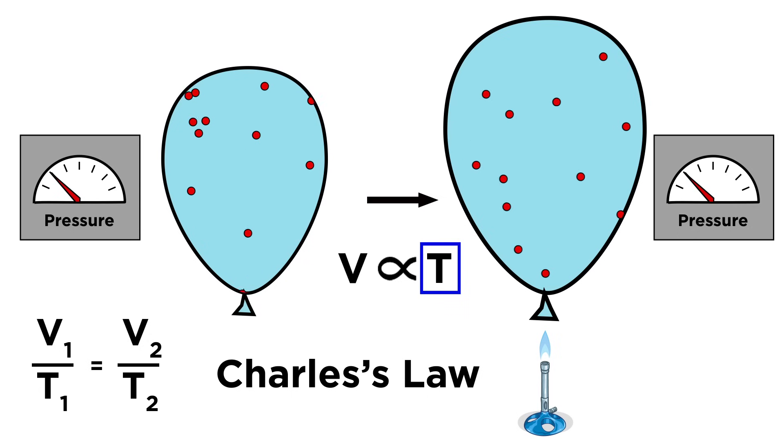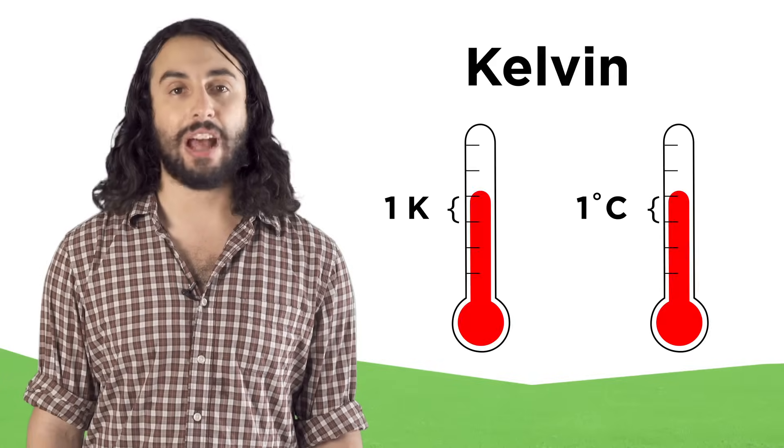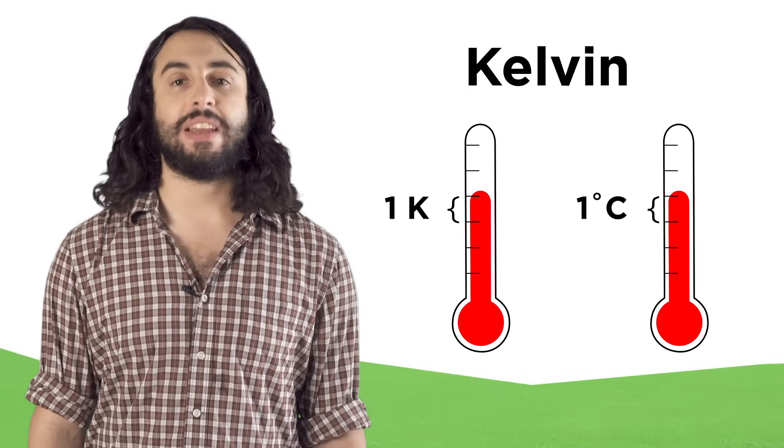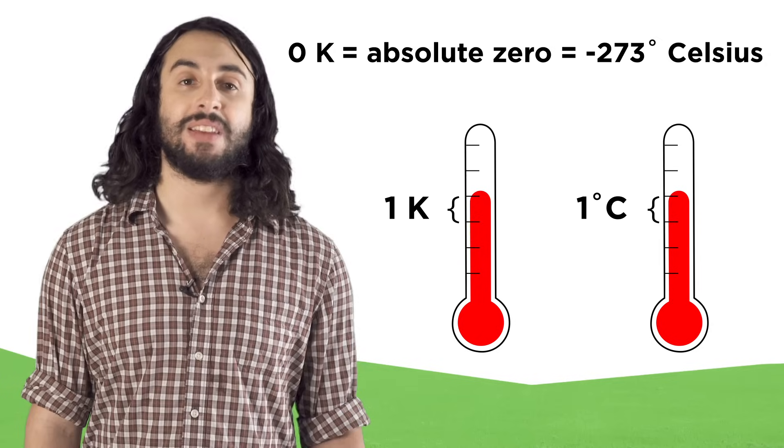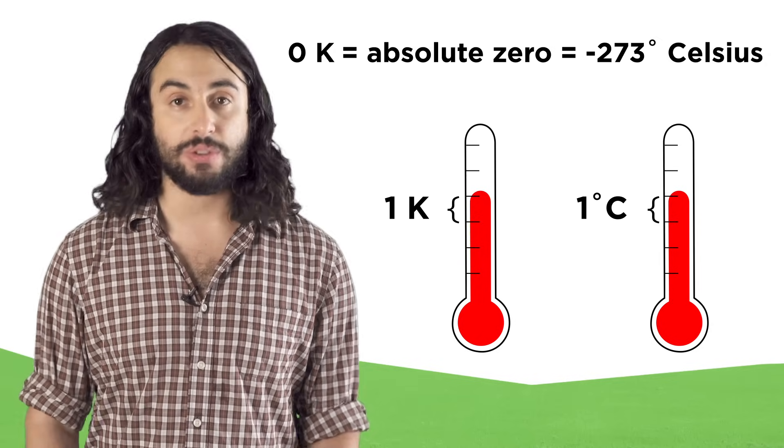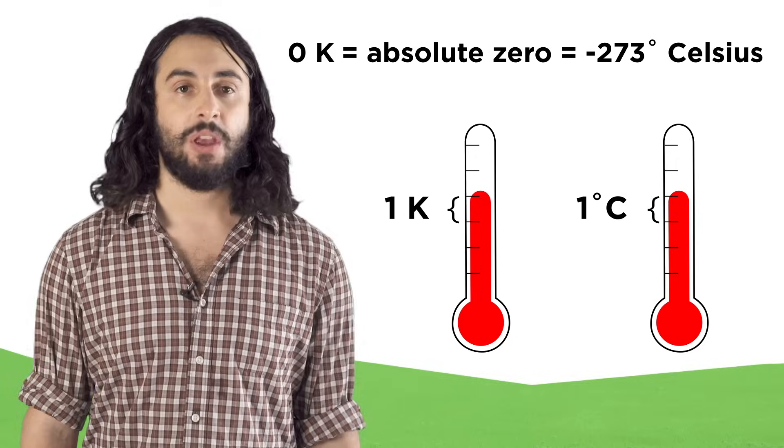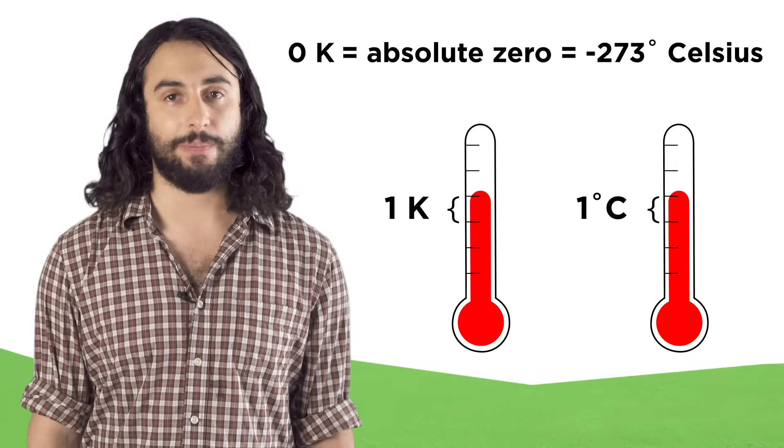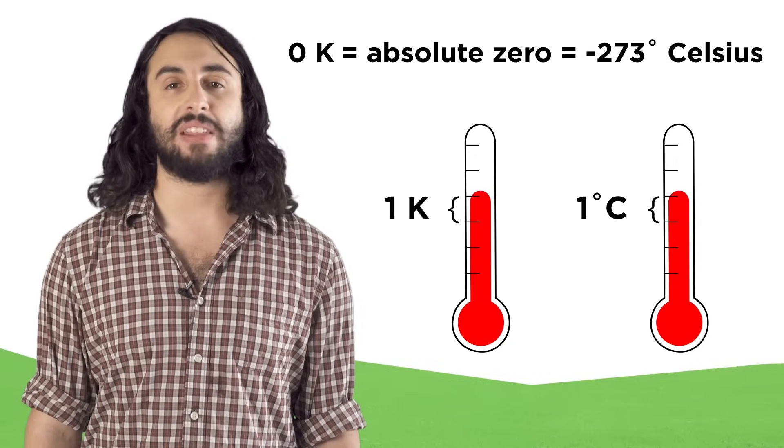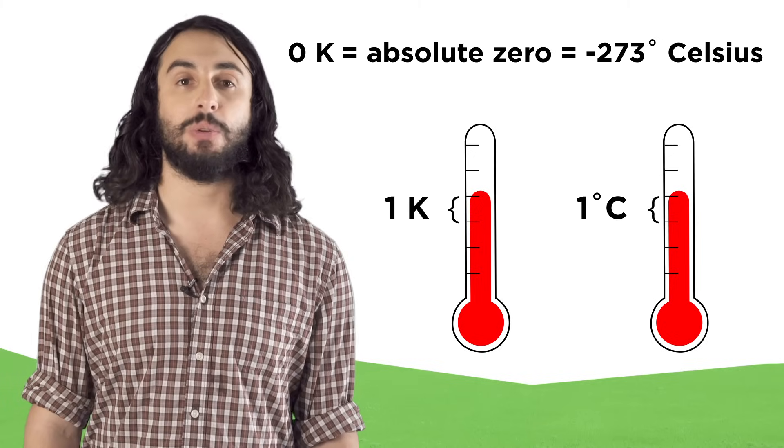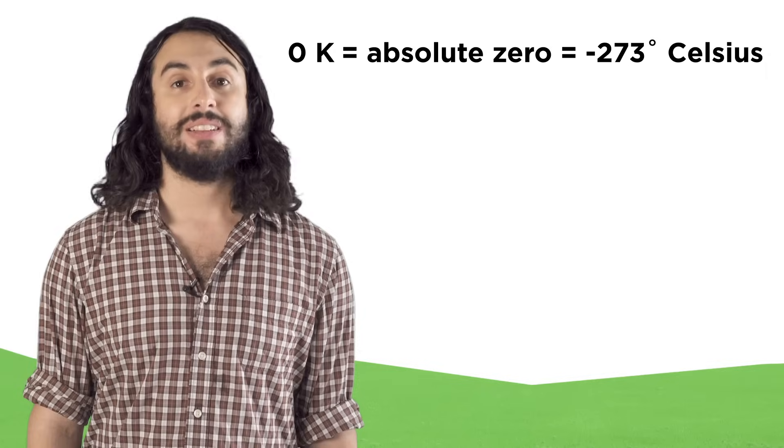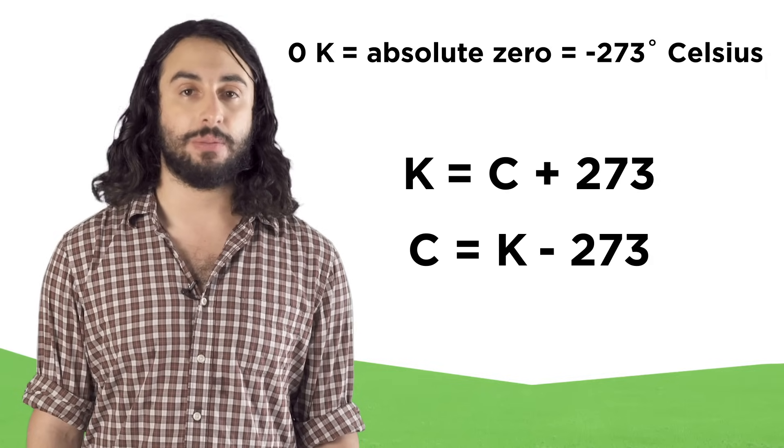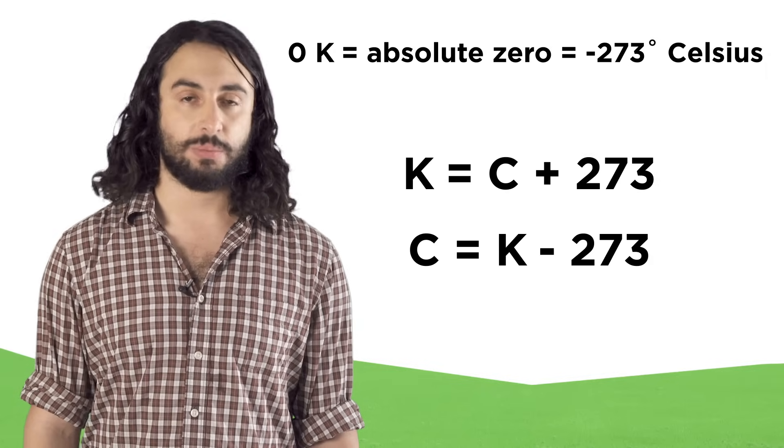When we do calculations with temperature, we must always use an absolute temperature scale called the Kelvin scale. One degree Kelvin is the same magnitude as one degree Celsius, but zero Kelvin is absolute zero, the lowest temperature possible, a complete absence of heat energy. This helps us avoid weird mathematical issues that would arise if we were doing a calculation involving a negative or zero temperature. To get Kelvin from Celsius, just add 273. To go the other way, subtract.